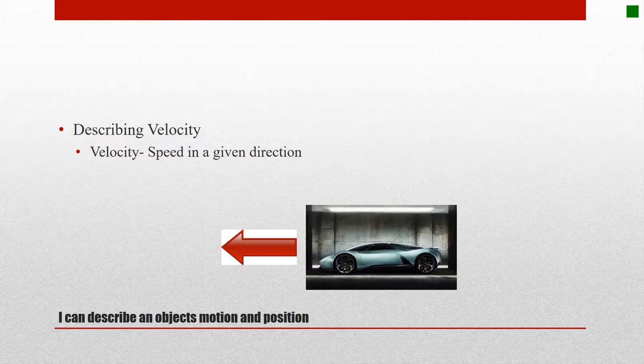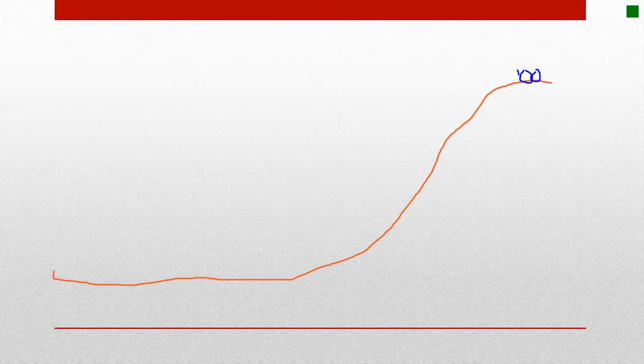We have a track, a little Hot Wheels track here, that has a hill. It comes down and it flattens out, and then we have our car. Now, we're going to calculate velocity in this direction, which is where the track is going.